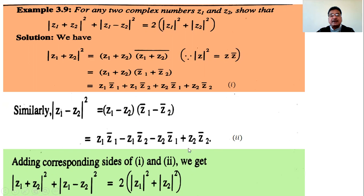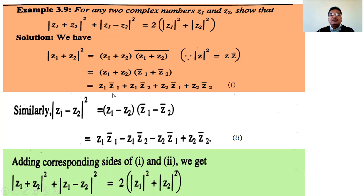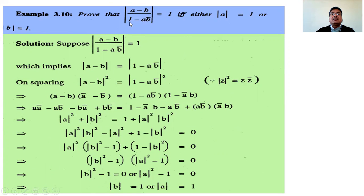Adding equations (1) and (2): the terms z1·z̄2 and -z1·z̄2 cancel, and z2·z̄1 and -z2·z̄1 cancel. What remains is 2·z1·z̄1 + 2·z2·z̄2. Since z1·z̄1 = |z1|² and z2·z̄2 = |z2|², we get 2|z1|² + 2|z2|² = 2(|z1|² + |z2|²), completing the proof of the parallelogram law.